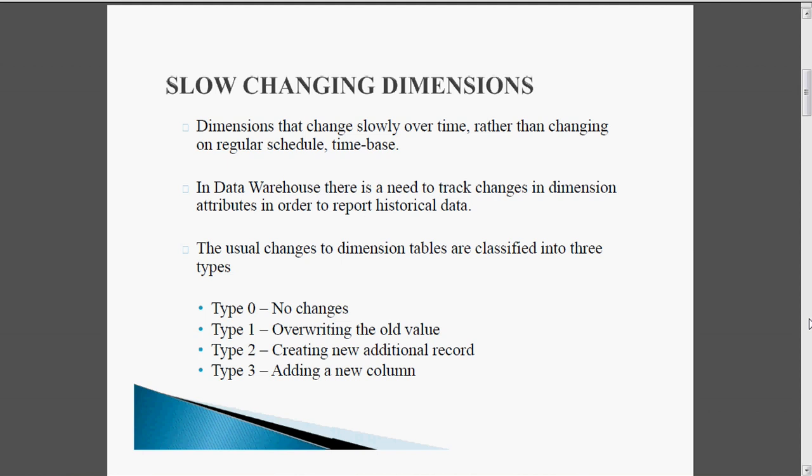All of a sudden, the marital status won't change. In a Data Warehouse, there is a need to track the changes in dimension attributes in order to report historical data. The usual changes to dimension tables are classified into three types.